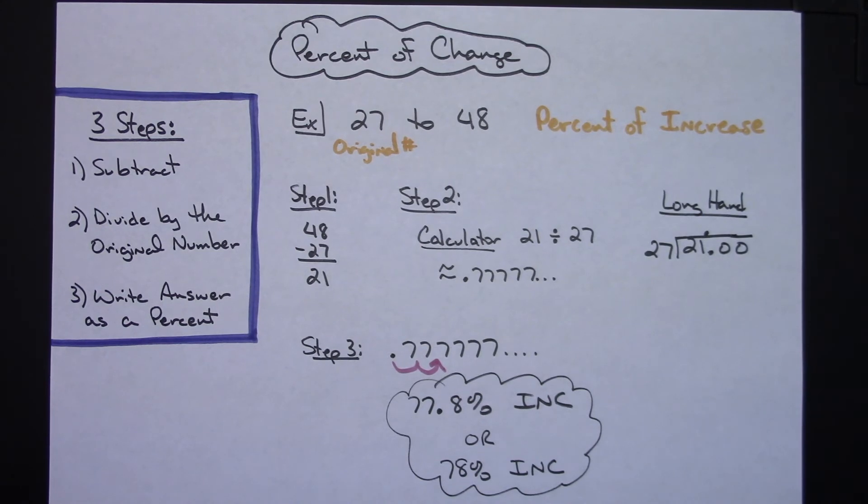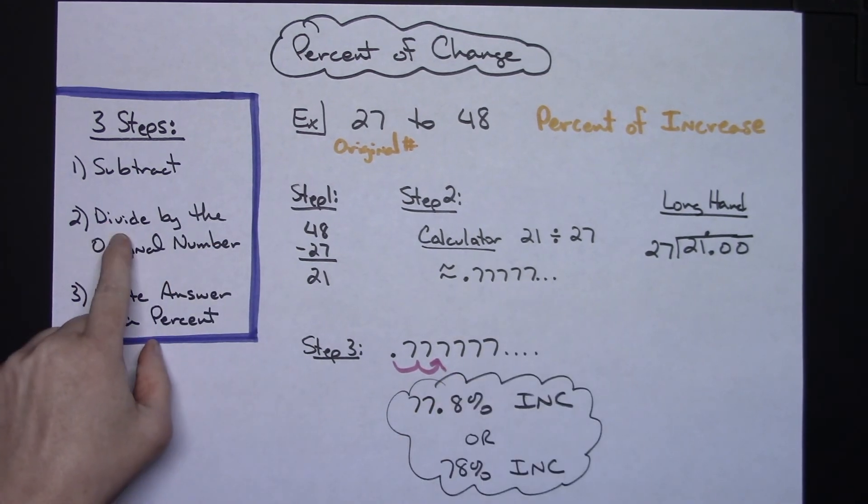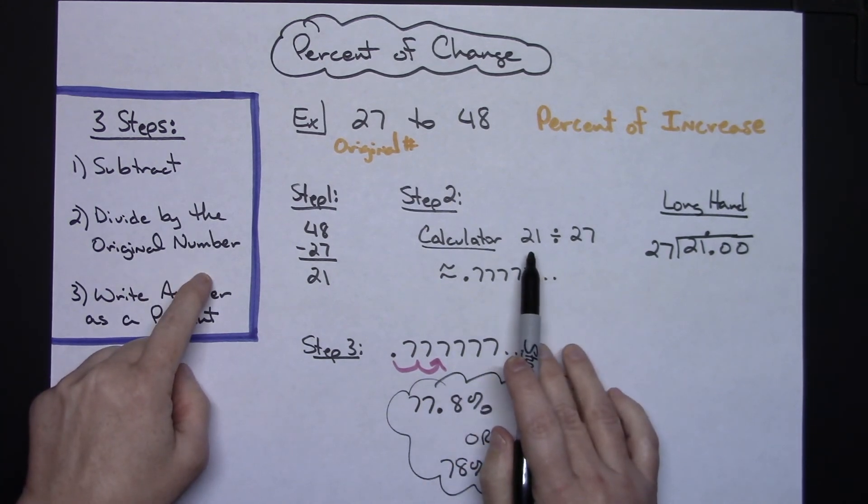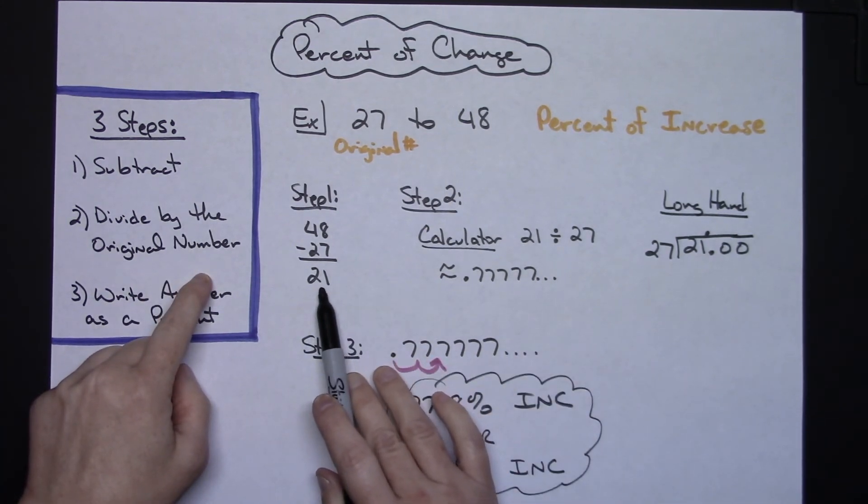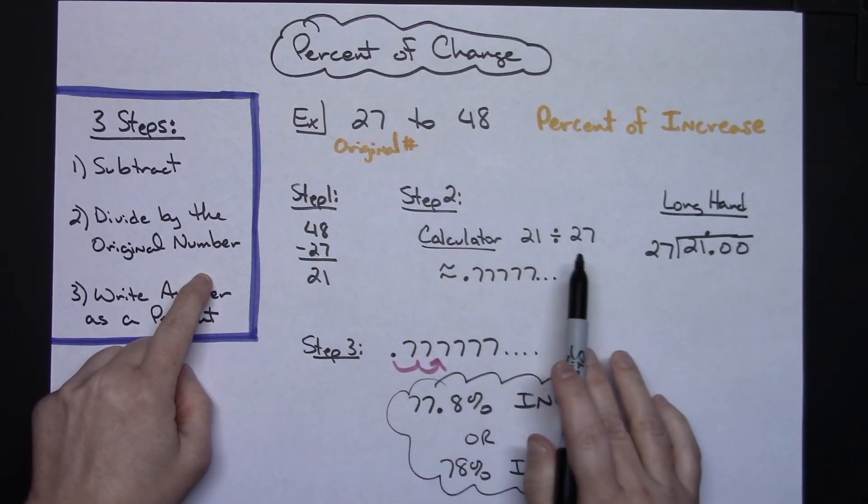But, one quick example of how to calculate a percent of change. It is three steps every time: subtract. When you divide, you want to make sure you divide by the original number. So in the calculator, whatever you got when you subtracted goes in first, and then you divide by that original number, 27.